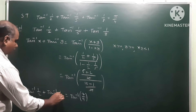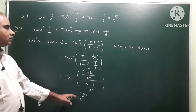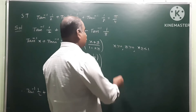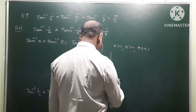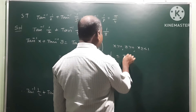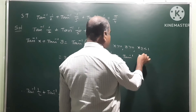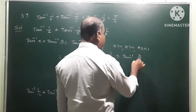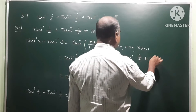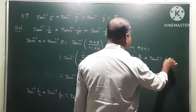Now we calculate the next step. We have tan inverse 1/2 plus tan inverse 1/5 combined as tan inverse 7/9, and then we add the third term tan inverse 1/8.